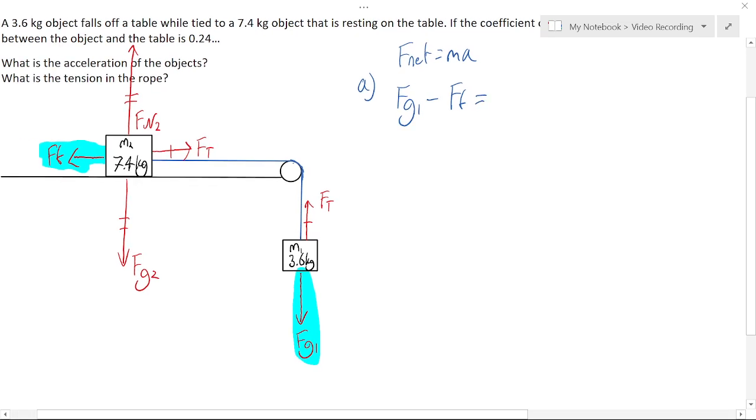Now for mass, we're looking at the whole system. So we have to use both masses. So I'm going to say m1 plus m2. And that's times a.